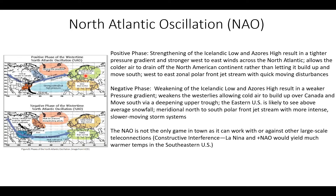You also see some features associated with the NAO phases. With a positive NAO phase, you have warmer and wetter conditions than normal across northern Europe, and drier than normal conditions across the Mediterranean. With a negative phase of the NAO, you get above-normal snowfall in the eastern U.S., wetter than normal conditions across southern Europe and the Mediterranean area, and colder and drier than normal conditions across northern Europe — Norway, Sweden, Finland, the U.K., Wales, France, Germany — into Siberia.